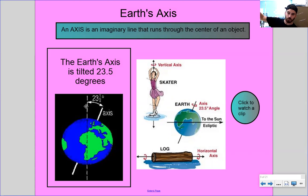That doesn't mean we're walking on a slant — we don't feel that. But the tilt determines not how much sunlight we get, but how much heat or how much indirect heat we're getting for the seasons. I've got a really good picture to explain that right now.